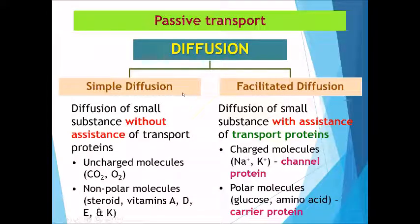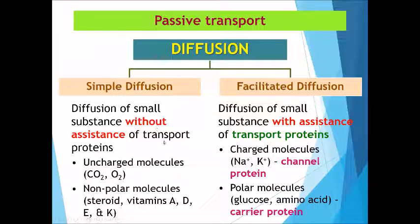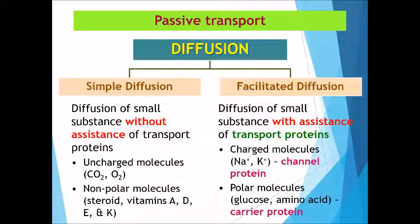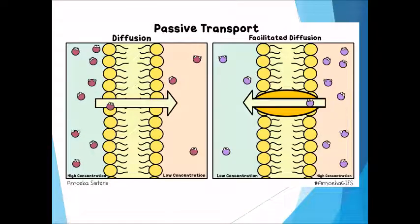Diffusion can be divided into two types: simple diffusion and facilitated diffusion. The only difference is that simple diffusion does not involve any assistance from transport proteins, while facilitated diffusion needs help from transport proteins to transfer charged molecules and polar molecules.